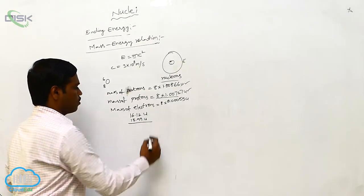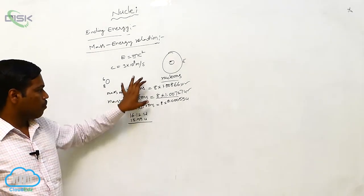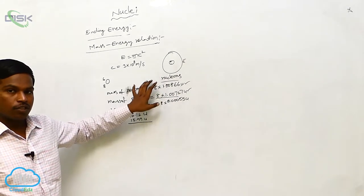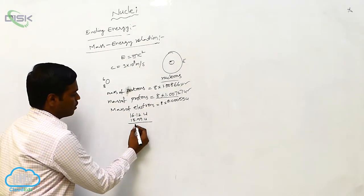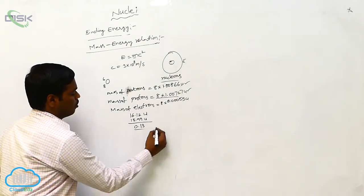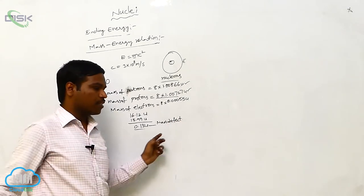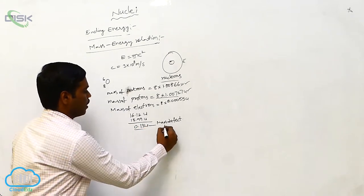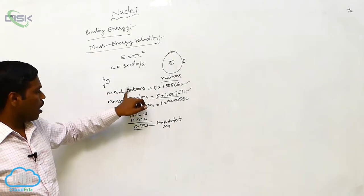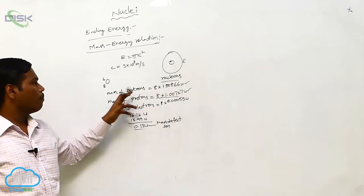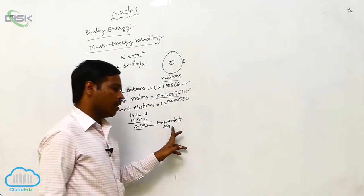The mass of the constituents — the sum of the constituent elements — is greater than the actual mass of oxygen. If we subtract the actual mass from the sum, we get a value of approximately 0.13 units. This difference is called the mass defect.